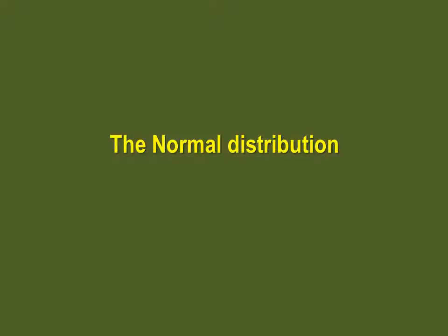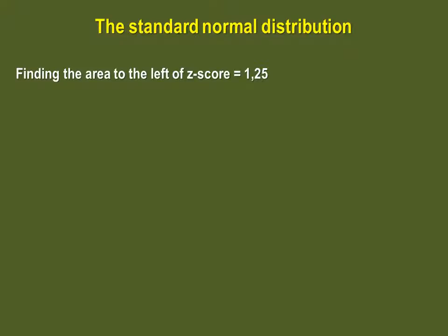Now that we've seen the properties of the standard normal distribution and how to use the table, let's do a few examples. Let's find the area to the left of Z-score 1.25.